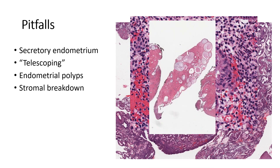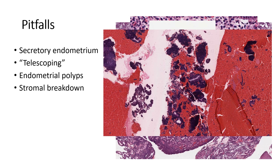Another pitfall is endometrial polyps — you can get focal glandular crowding in polyps just by the nature of it being a polyp, and you should not mistake that for hyperplasia unless it's a very diffuse process. And lastly, endometrial stromal breakdown: if you have breakdown of stroma between glands, the glands can appear crowded as they float close to each other. But unless there is stroma in between indicating a solid piece of tissue, you can't really evaluate that area — you need a solid piece of tissue, not just floating glands.